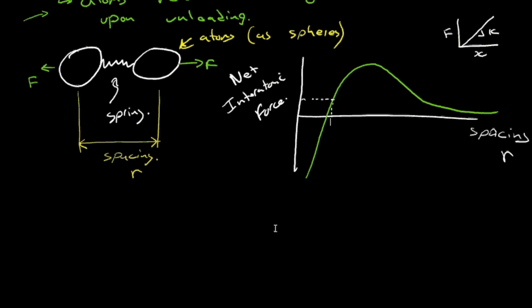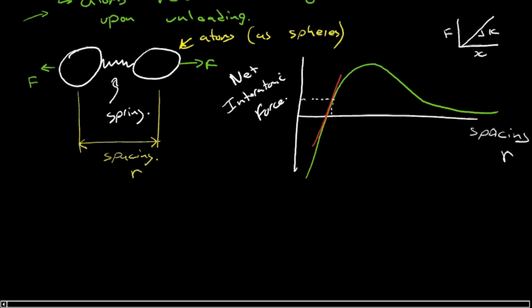And in fact, it turns out that it's actually quite simple, the relationship. If we say, well, the interatomic force separation curve is roughly a straight line there, we could say, well, the slope of that straight line is just the derivative of that curve. That's the slope of that curve, df by dr at this particular value of r, and that's the special one called r0.